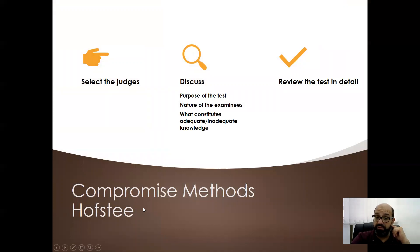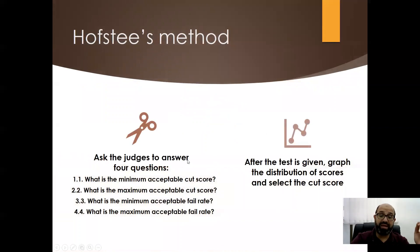The other method is the Hofstein method which we call compromise method. We select the judges. We discuss with them the purpose of the test, the nature of the examinees, what is an adequate or inadequate knowledge, and review the test in detail. Then we ask them to answer four questions, very important four questions. What is the minimum acceptable cut score? What is the maximum acceptable cut score?